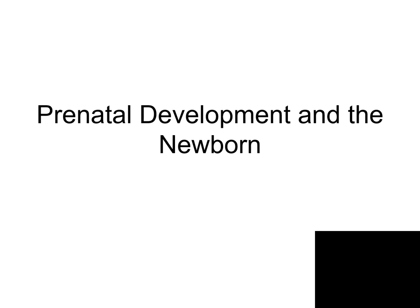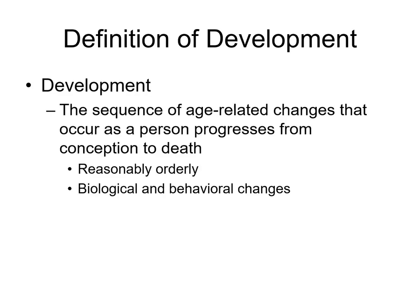Welcome to your lecture on prenatal development and the newborn. The definition of development is the sequence of age-related changes that occur as a person progresses from conception to death. These are age-related changes, so we can say things like most American children will walk by age one, there's a normal age for a child to sit up, we know roughly around what age puberty and menopause will happen. Throughout your life, certain age-related changes occur from birth to death.